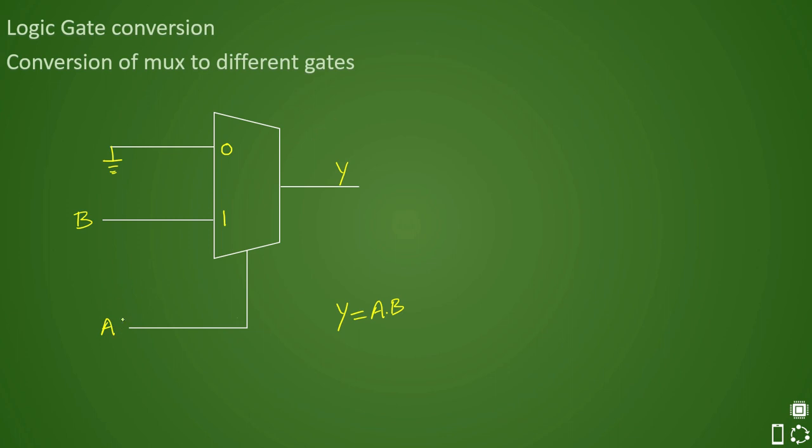You can also interchange it. So these pins are interchangeable. If you connect B here, you have to connect A here. That gives you an AND gate.